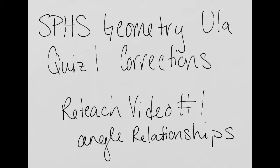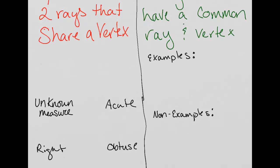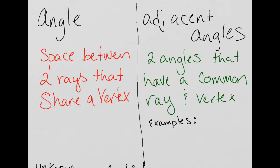This video is for Stony Point High School Geometry Unit 1A Quiz 1 Corrections over Angle Relationships. This video is going to go over six different angle vocabulary words.